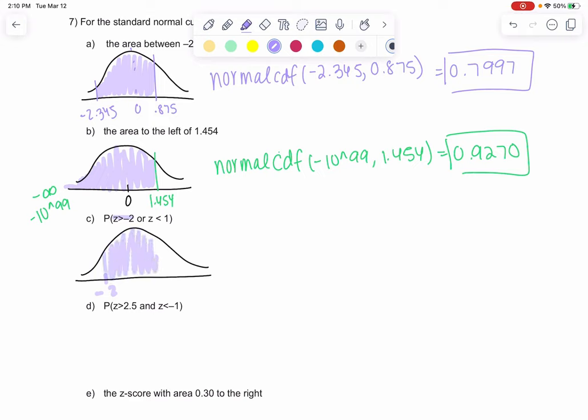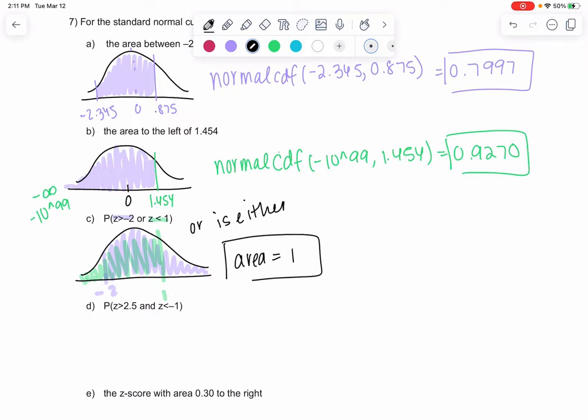Negative 2 will be here. Greater than negative 2 will be everything to the right. Or less than 1 would be here. Or means either, so anything shaded would count. What I notice is the entire curve is shaded. So the area would be 1 without using normal CDF because we shaded the entire curve.